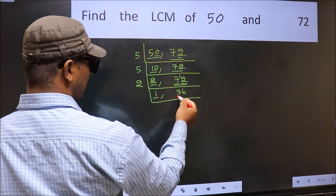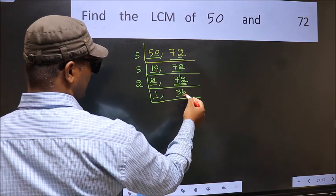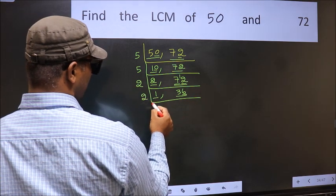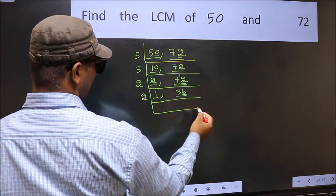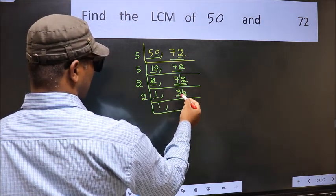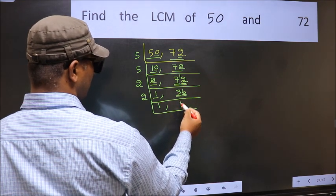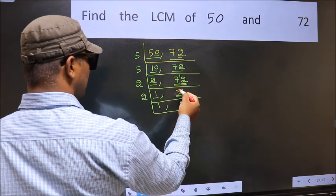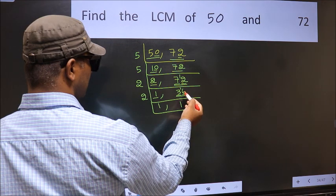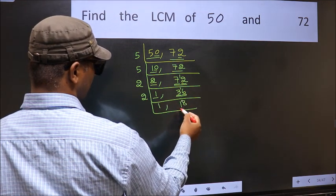Focus on the next number 36. Last digit 6 is even, so take 2. First digit 3 — a number close to 3 in the 2 table is 2 times 1 = 2. 3 minus 2 = 1, carried forward gives 16. When do we get 16 in the 2 table? 2 times 8 = 16.